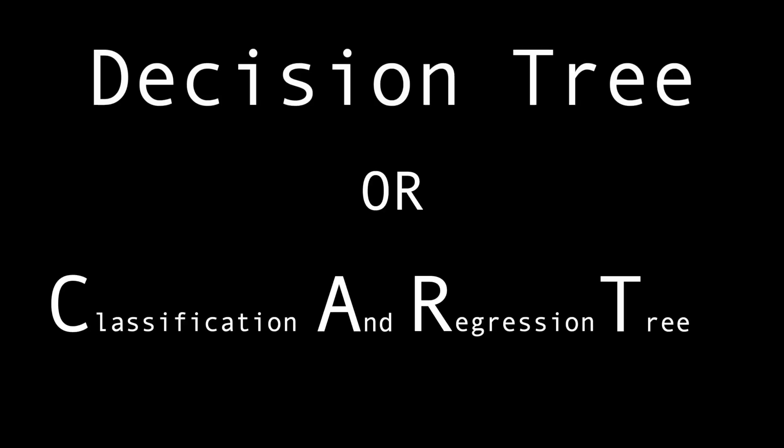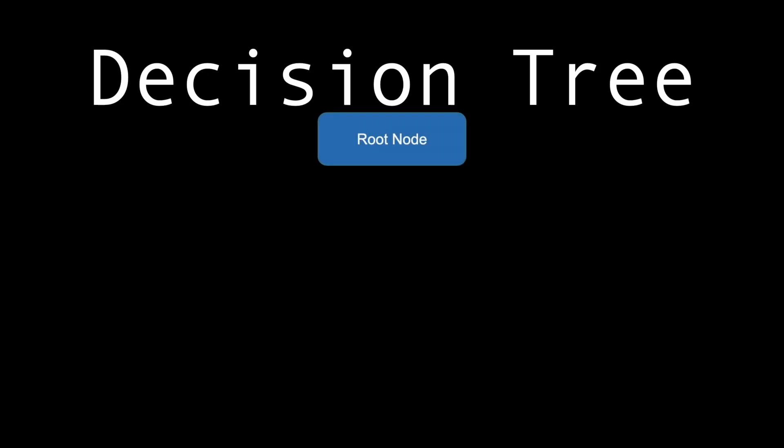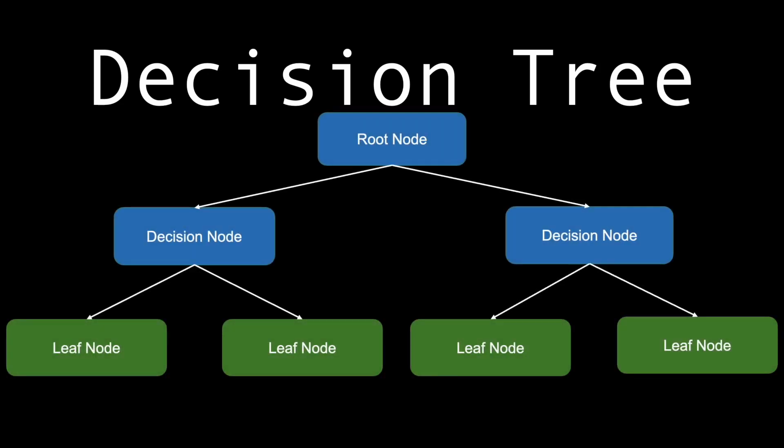XGBoost is a gradient boosting decision tree algorithm. A decision tree or CART algorithm can be used for both regression and classification. A tree is made of a root node, branches, decision nodes, and leaf nodes.